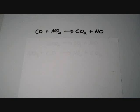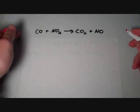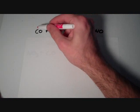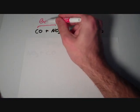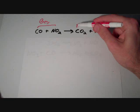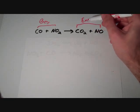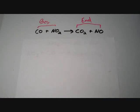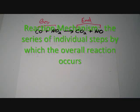So this overall chemical equation — what does it tell us? On the left side we have the reactants, and on the right side we have the products. Basically all this reaction is telling you is what you have at the beginning and what you have at the end. It doesn't tell you anything about what happens in between. That is where a reaction mechanism comes in.